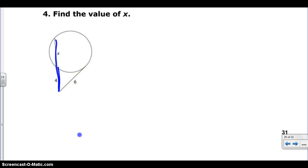So here we go. The length of the whole thing is X plus 4 times the outside piece, which in this case is just 4, just the outside piece. And that's equal to our tangent, which is 6 squared.